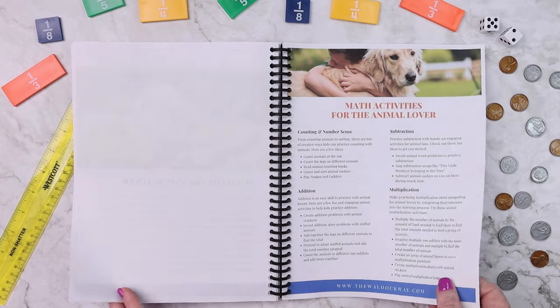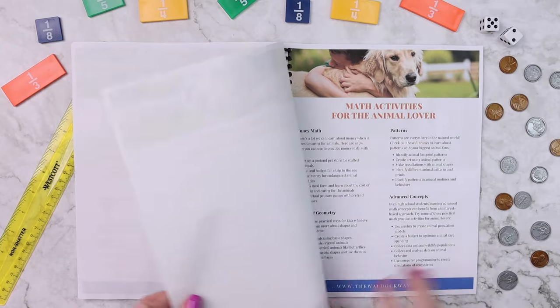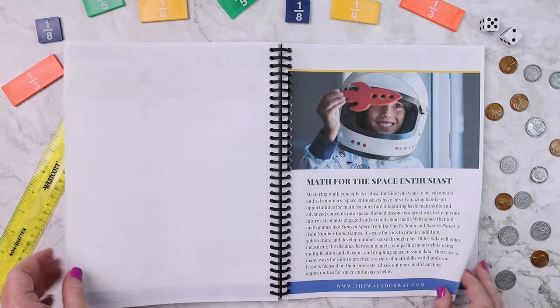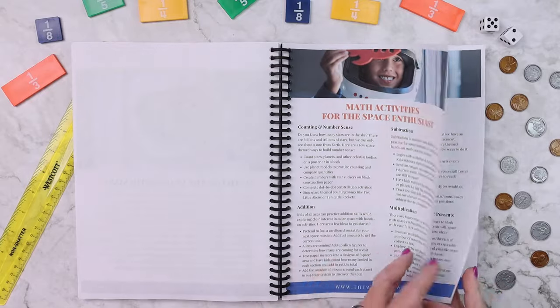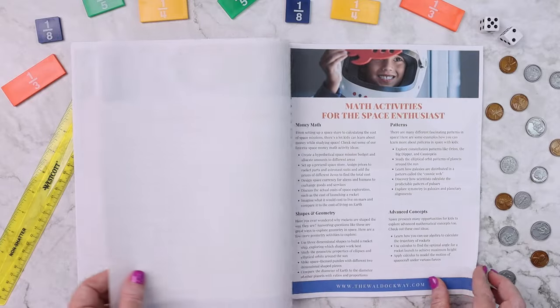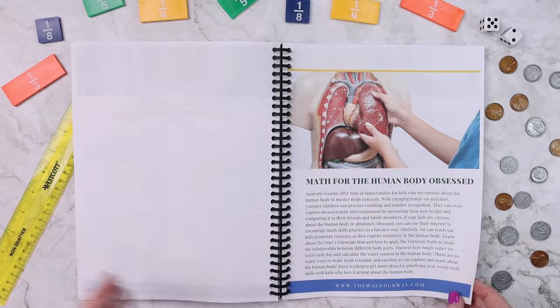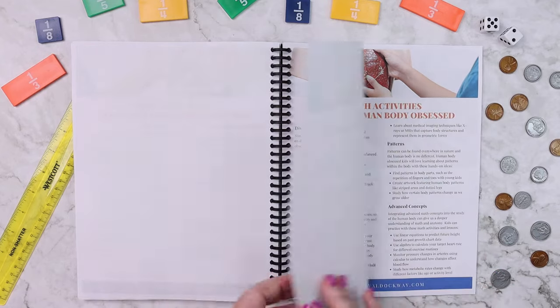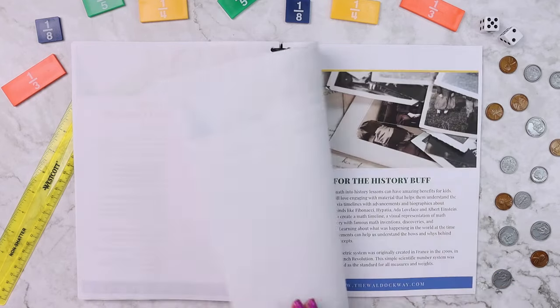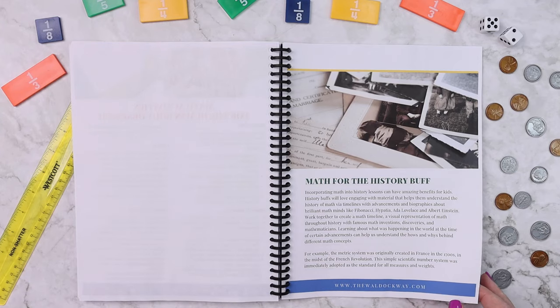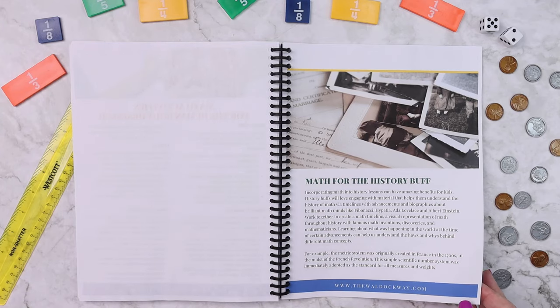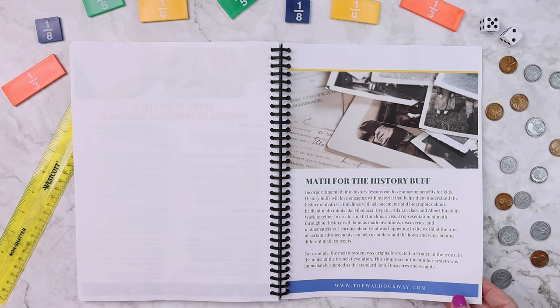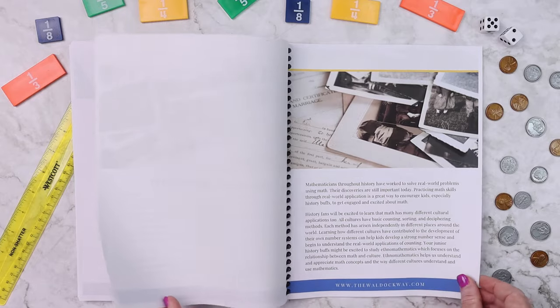or how you can use math if they're interested in space, or some of the different activities that you can do if they're interested in the human body, is basically that after you've seen kind of this layout, you will be able to take whatever your child's interest is and build upon it for yourself. So we also included math for the history buff and math for the sports fan.